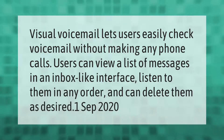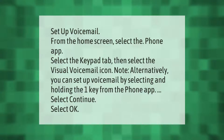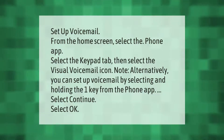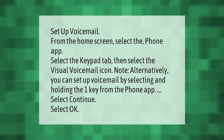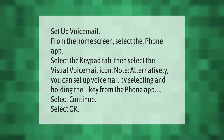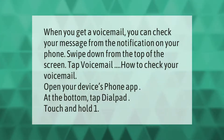To set up voicemail, from the home screen select the phone app. Select the keypad tab, then select the visual voicemail icon. Alternatively, you can set up voicemail by selecting and holding the one key from the phone app. Select continue, then select OK.